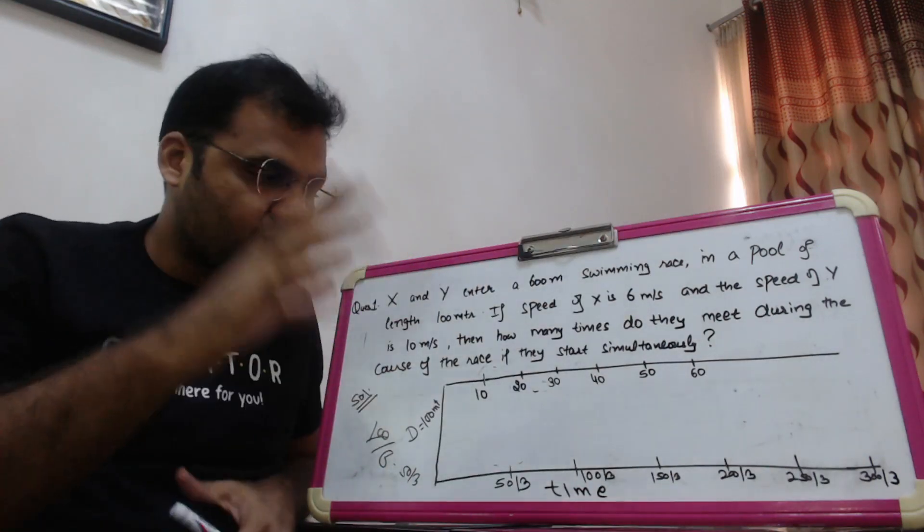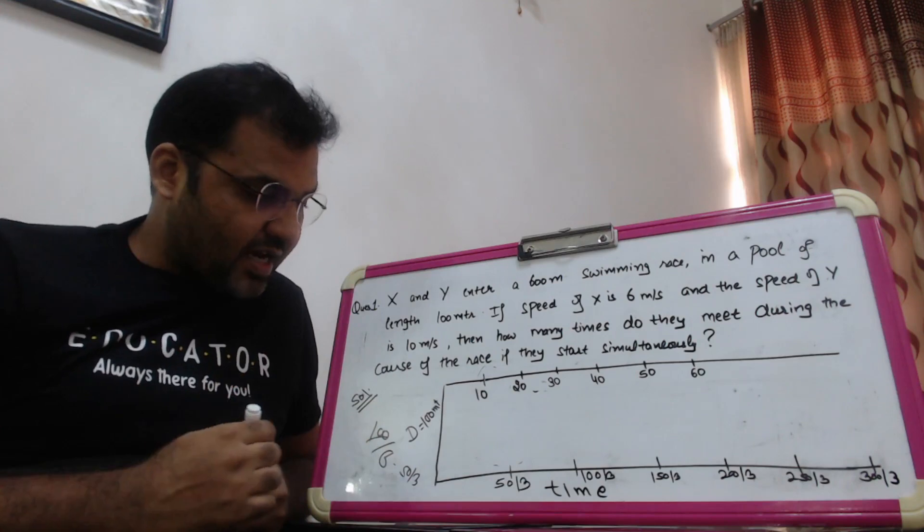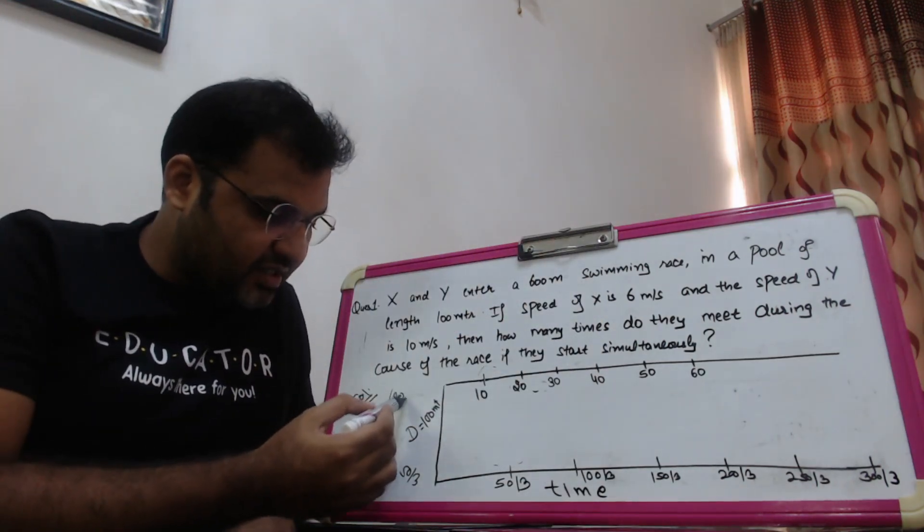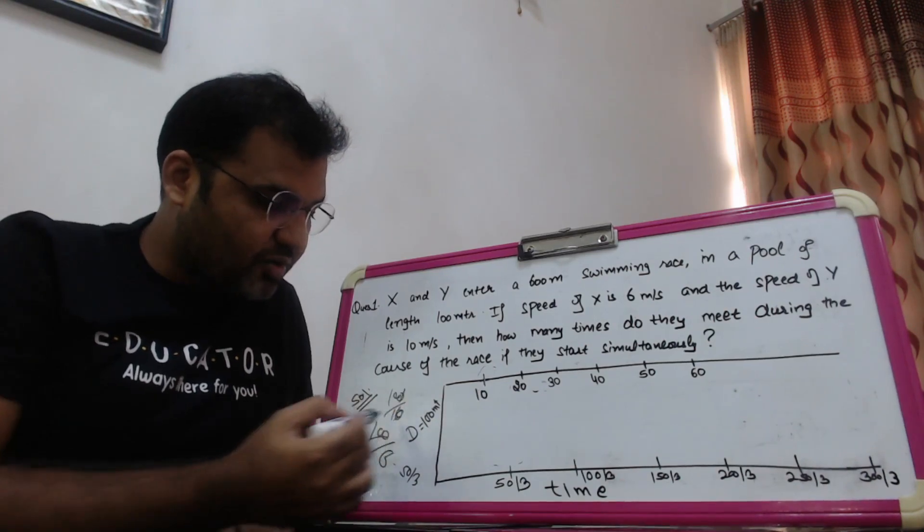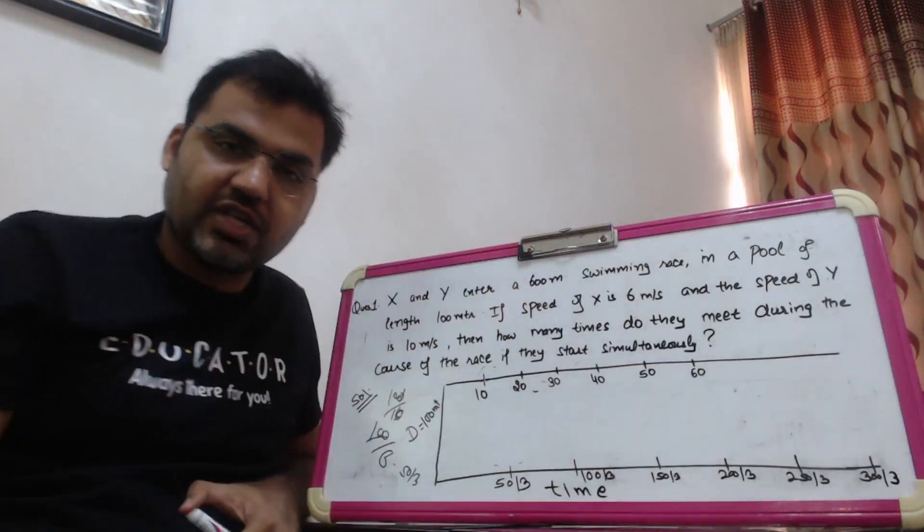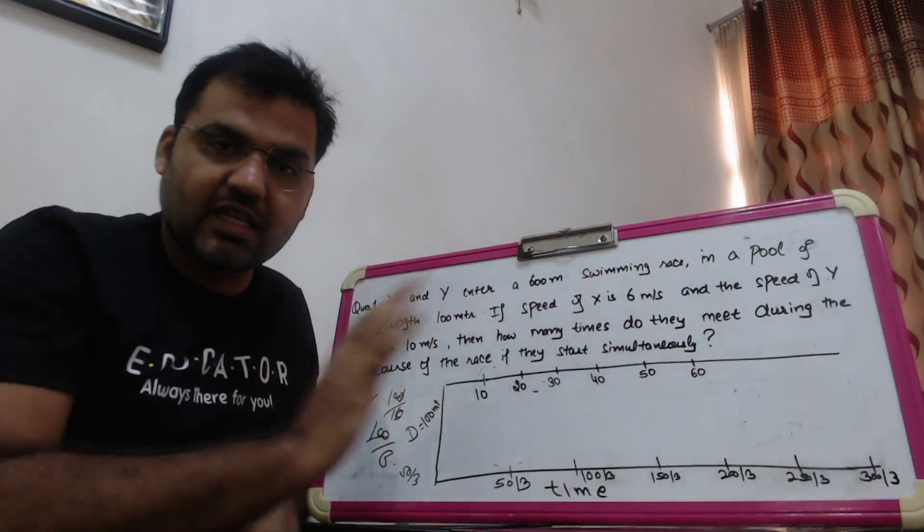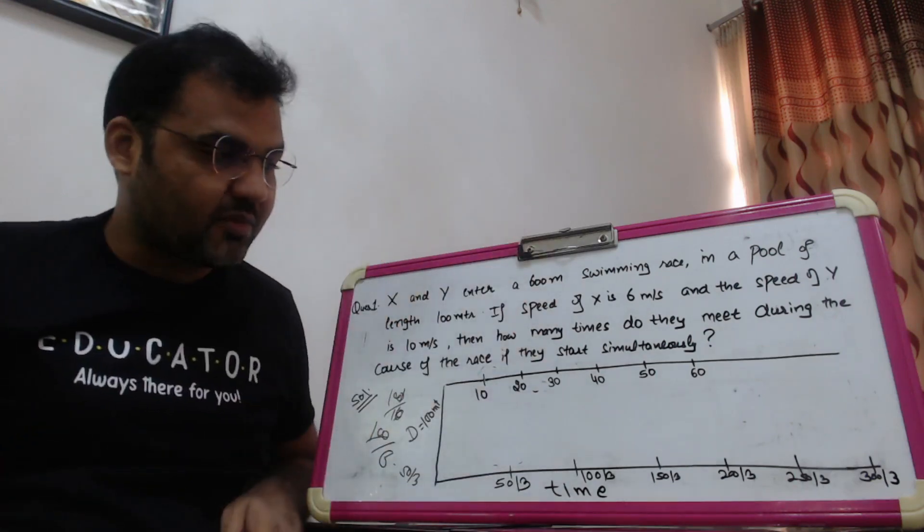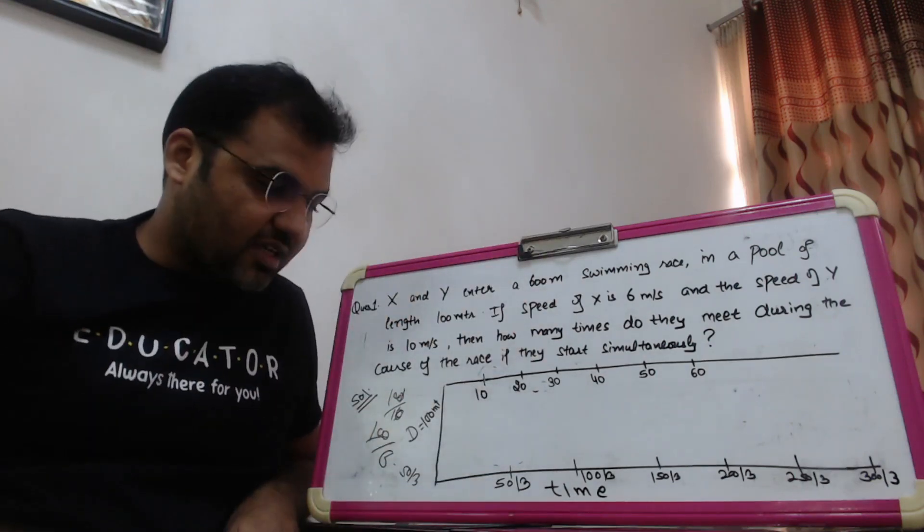Similarly, Y's speed is 10 meter per second. So 100 meter distance at speed 10 will be covered in 10 seconds. So 10, 20, 30, 40, 50, 60 - in 6 laps covered by the 60th second, all 6 laps will be done. Each lap takes total 10 seconds to cover.